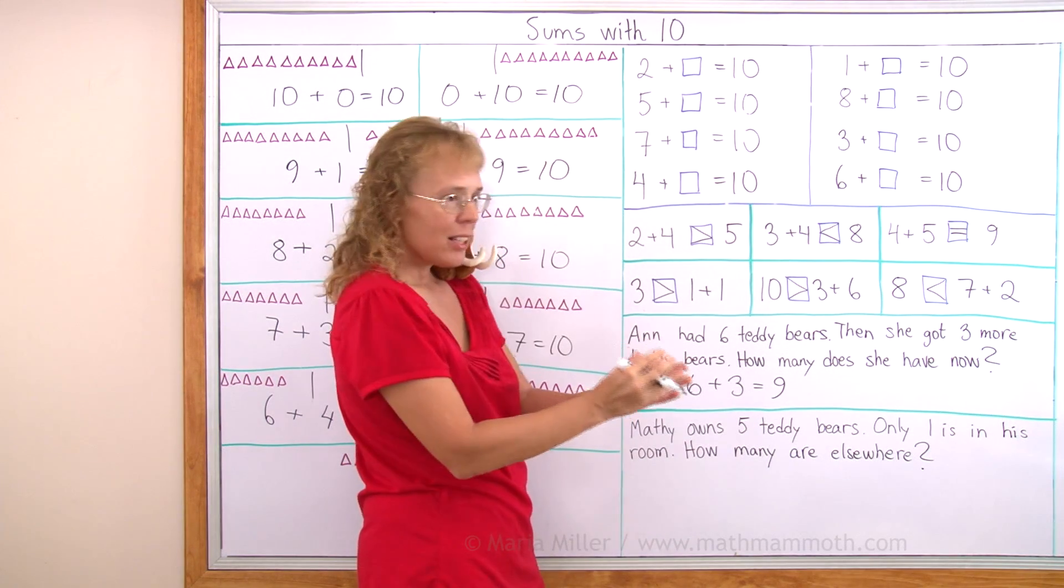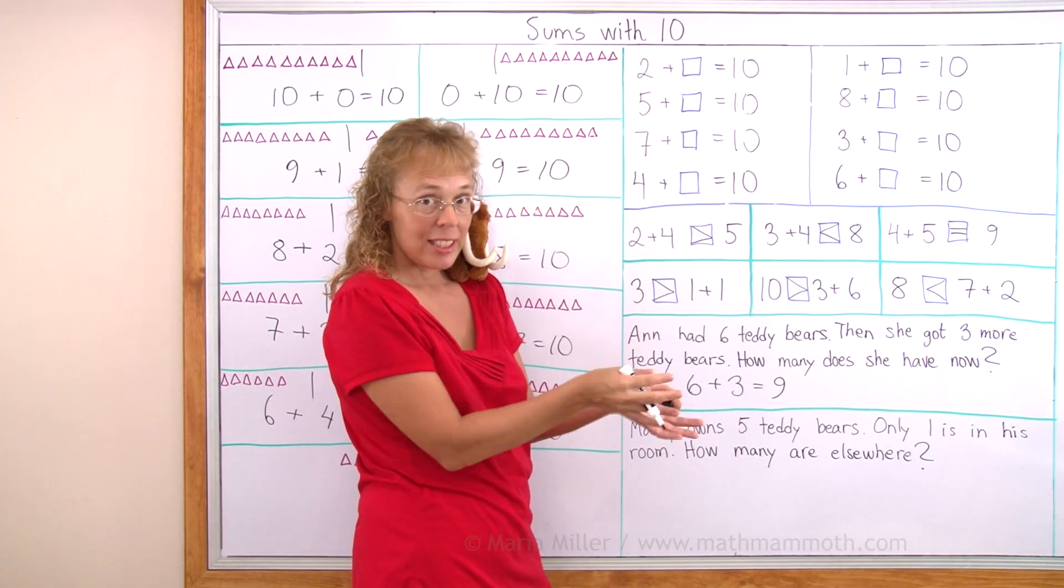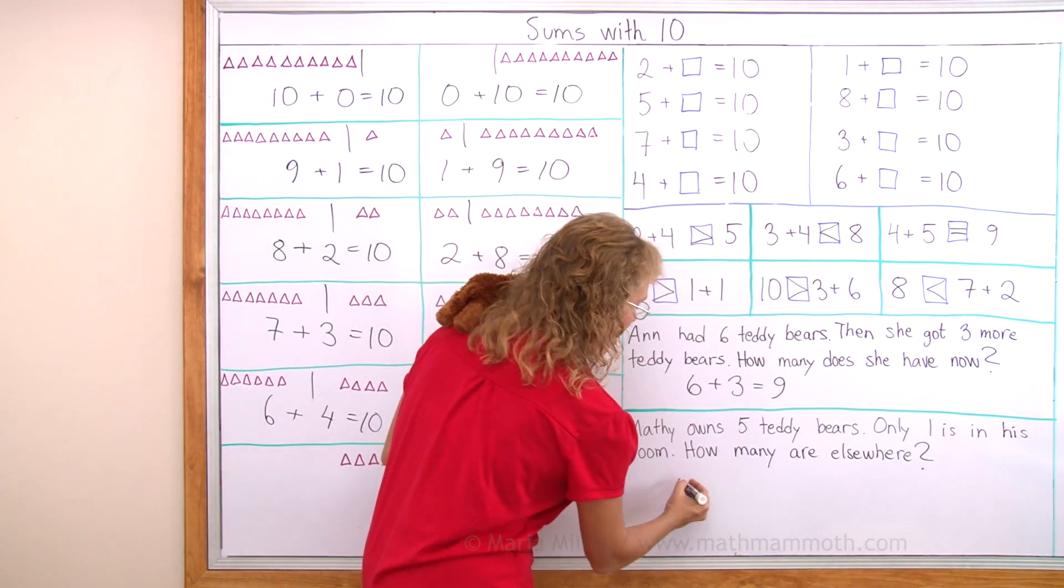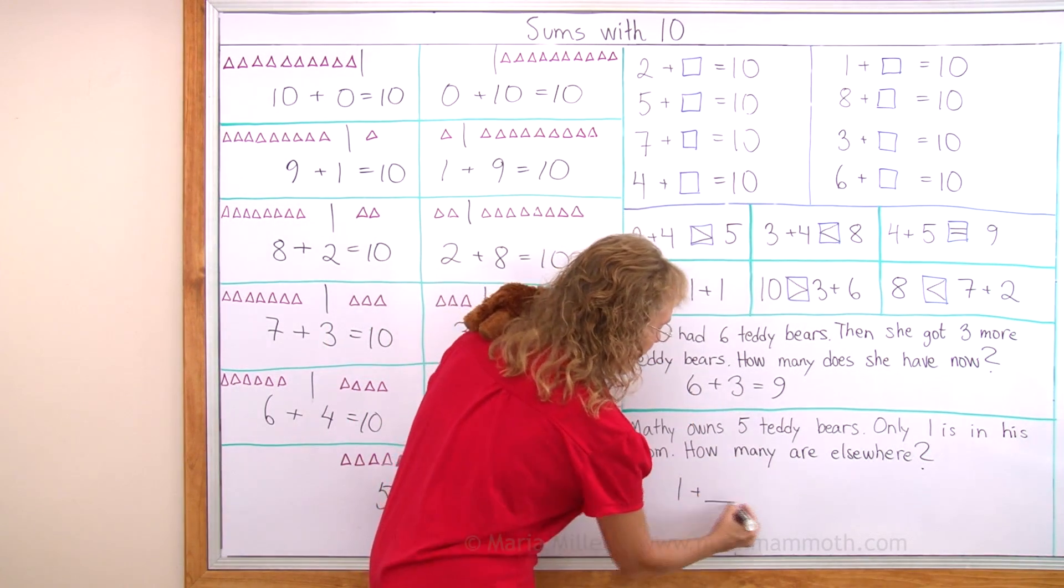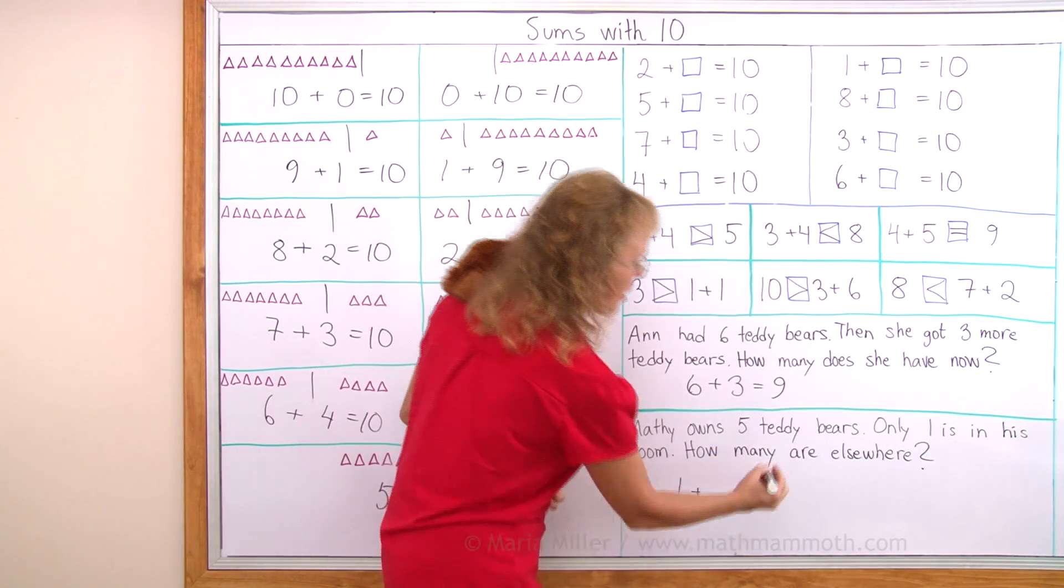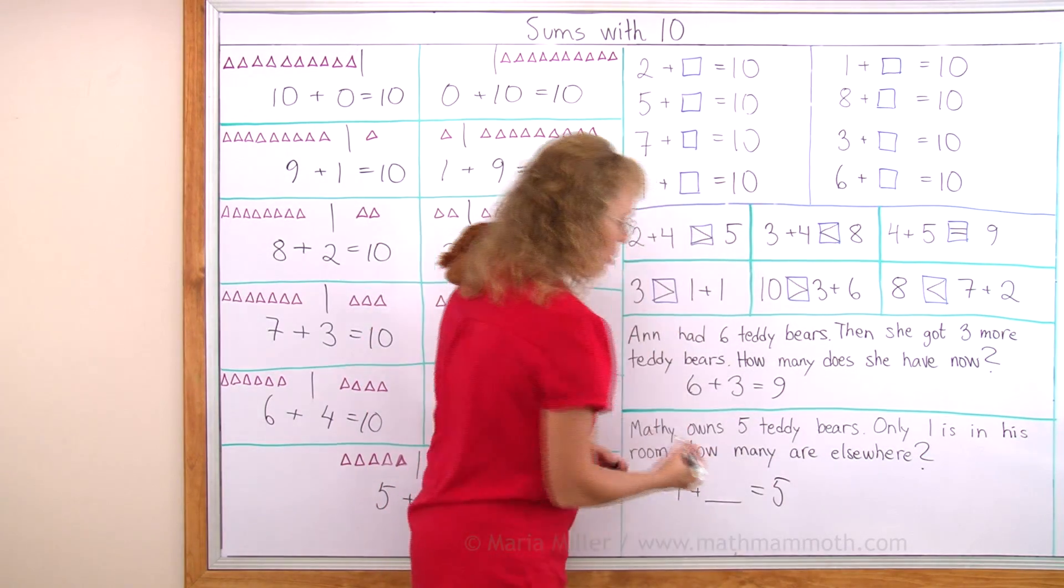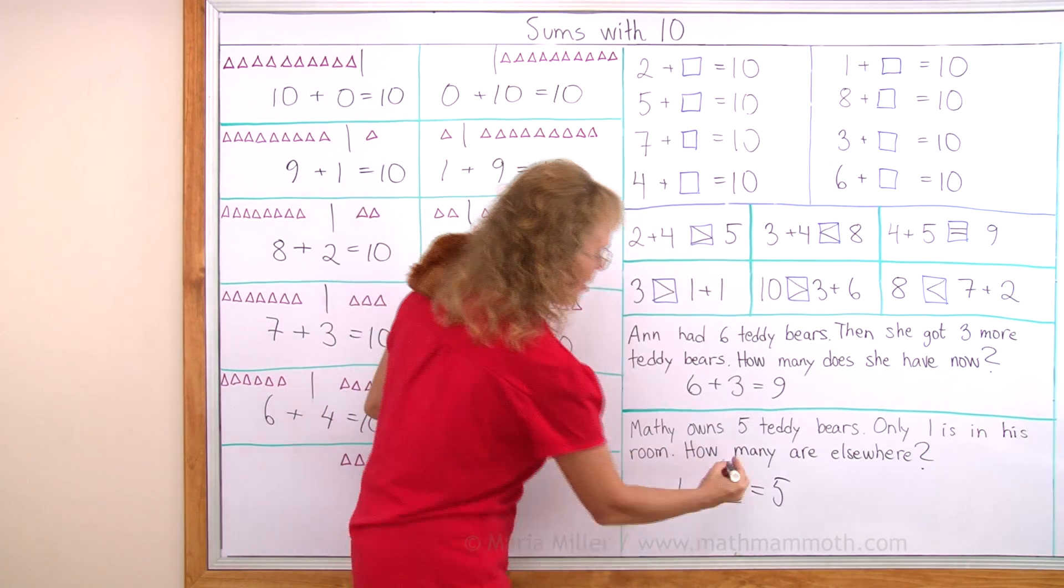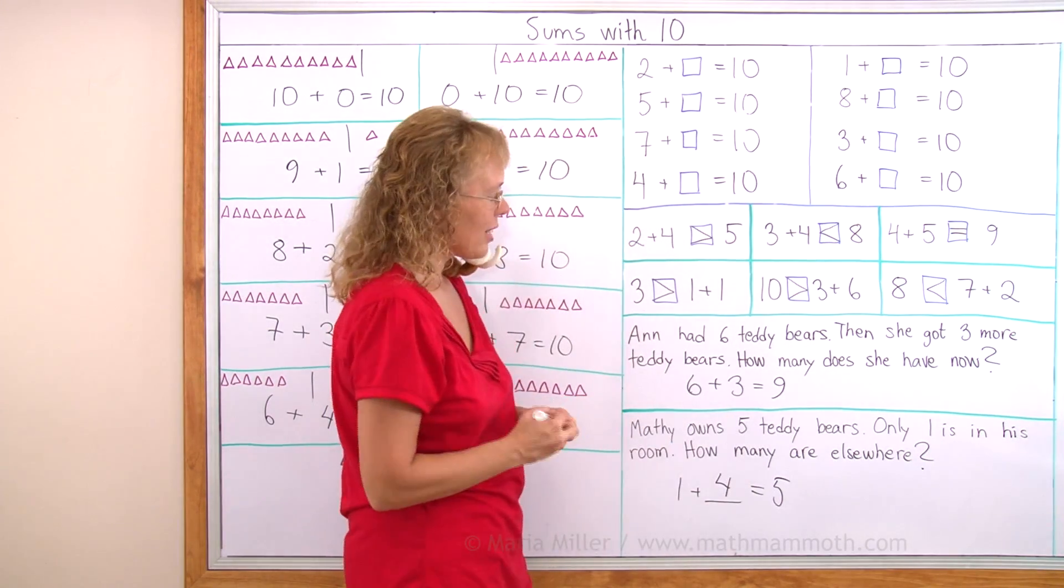That the teddy bears that are somewhere else and the one teddy bear in his room together make 5. So there's one teddy bear in his room and then so many teddy bears somewhere else and those together make a total of 5. 1 plus how many makes 5? The answer is 4. 4 teddy bears are elsewhere.